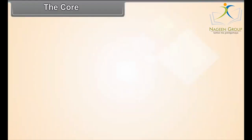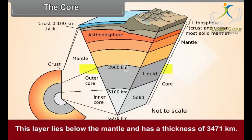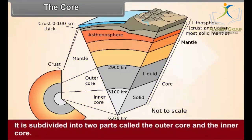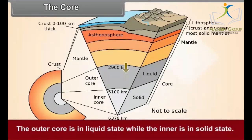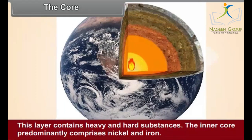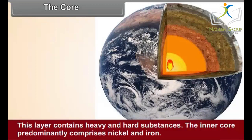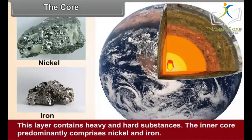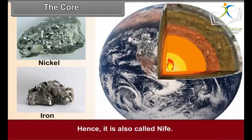The core. This layer lies below the mantle and has a thickness of 3471 kilometers. It is subdivided into two parts called the outer core and the inner core. The outer core is in a liquid state, while the inner core is in a solid state. This layer contains heavy and hard substances. The inner core predominantly comprises nickel and iron, and hence it is also called NIFE.